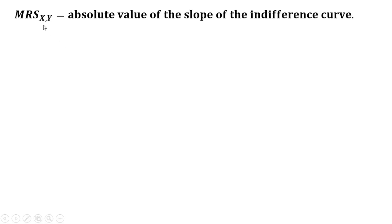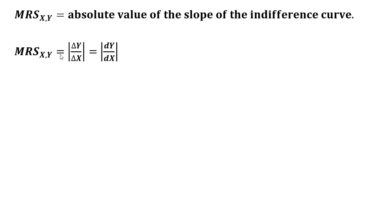The marginal rate of substitution of x for y equals the absolute value of the slope of the indifference curve, where we put good y on the vertical axis and good x on the horizontal axis. The absolute value of the slope is the change in y over the change in x. Since indifference curves are downward sloping, we drop the minus sign. In calculus notation, it's dy over dx.